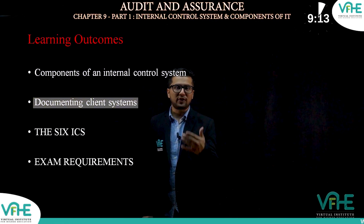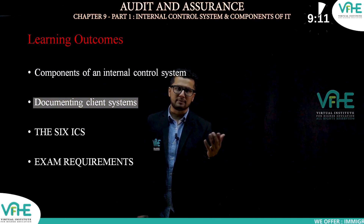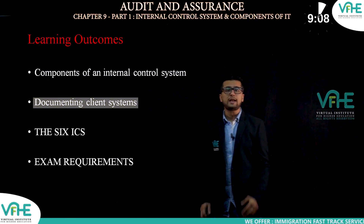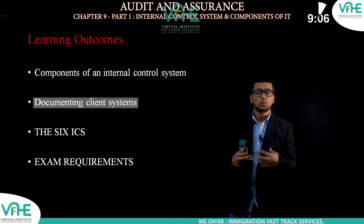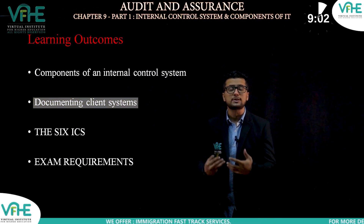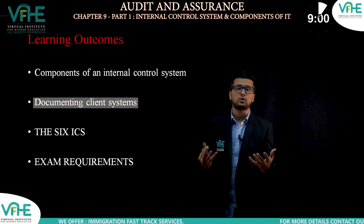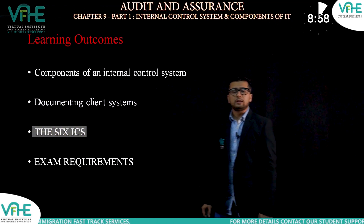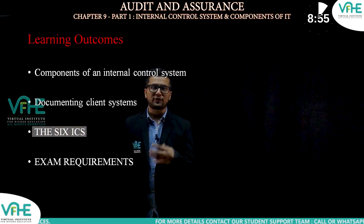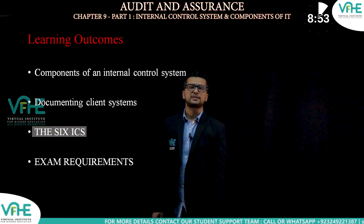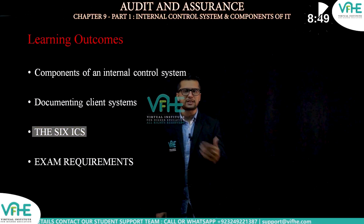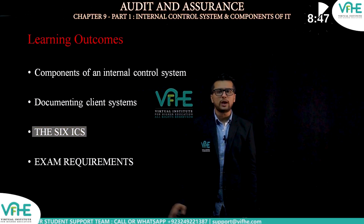Then we'll try to understand how to document the client systems. If a company has a sales system or a purchase system, we need to understand how, as an auditor, we could document those systems. In the syllabus of AA we have six different types of internal control systems, such as the sales system, purchase system, and so on.